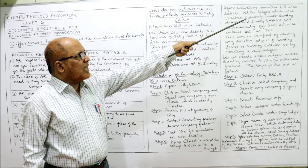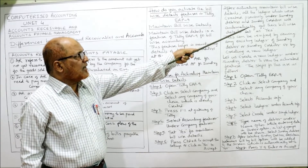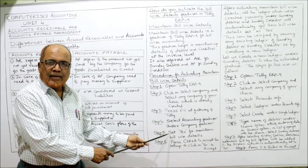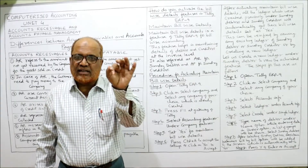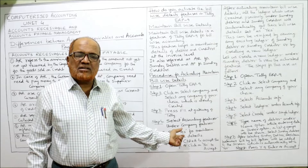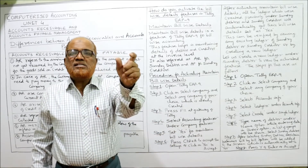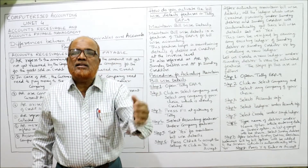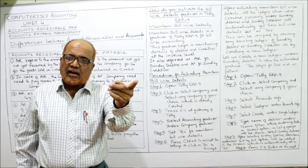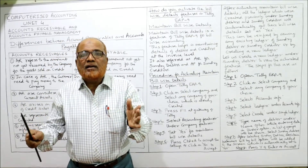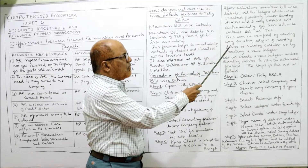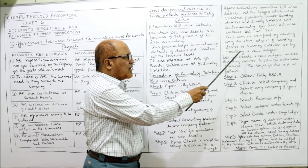After activating maintain bill-wise details, all the ledgers created previously under sundry debtors and sundry creditors will automatically get their bill-wise details set to yes. If you want to verify whether the activation was done, check any sundry debtor or sundry creditor ledger — it will automatically show yes for maintain bill-wise details.